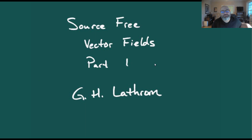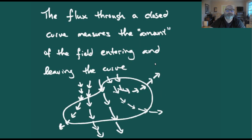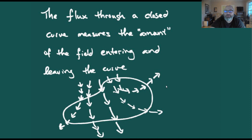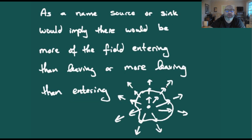Greetings everybody. In this video let's start looking at source-free vector fields. Remember that the flux through a closed curve measures the amount of a vector field that's entering and leaving that curve. The flux involves the dot product of the vector field with the normal to the curve, added up with a line integral.